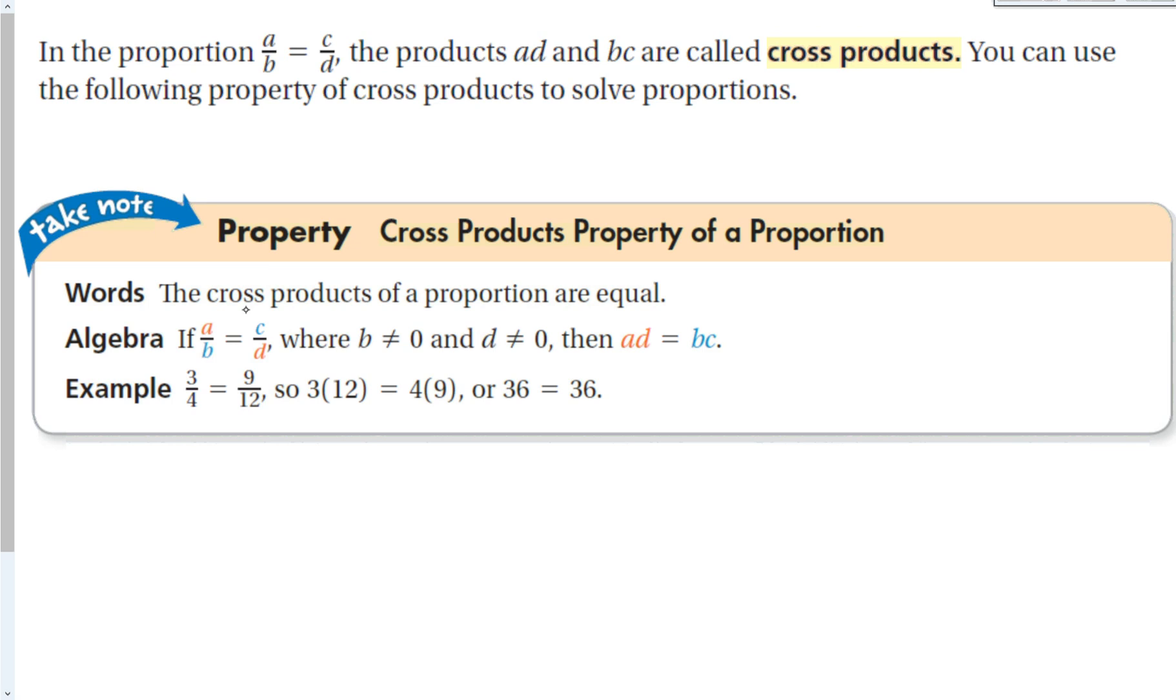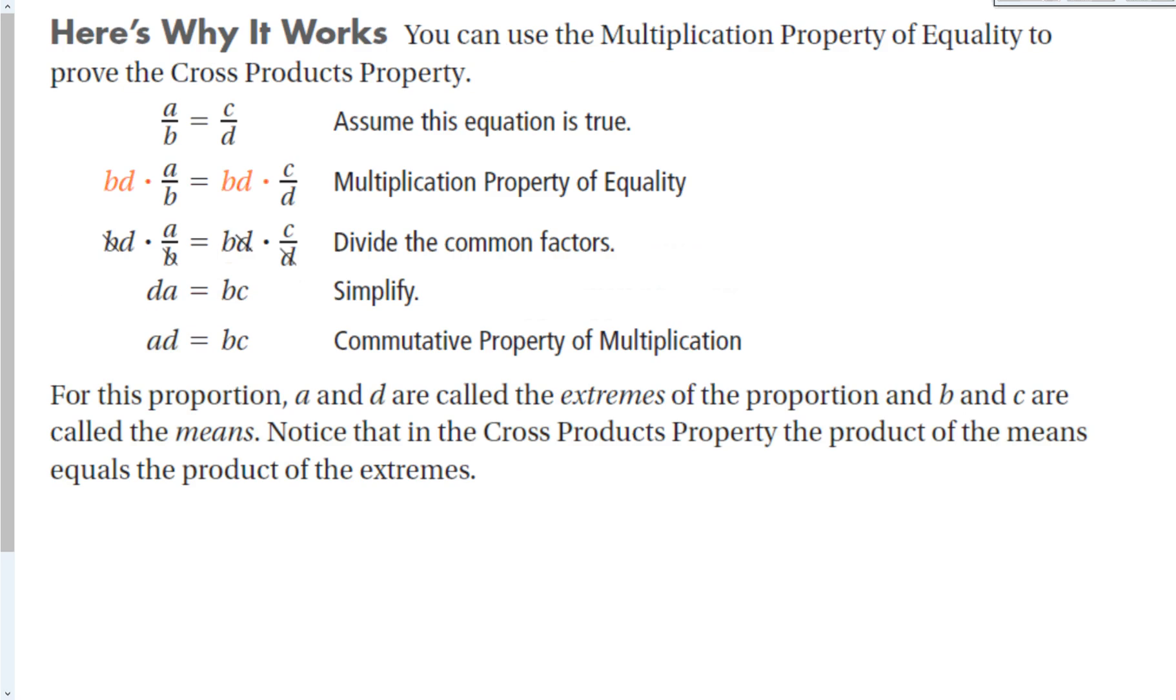You can use the following property of cross products to solve for proportions. The cross products of a proportion are always equal to each other. Notice in the red, A over B is equal to C over D. We have A and D. In the blue, we have B and C. As long as B and D are not equal to zero, then A times D is equal to B times C. For example, 3 times 12 is equal to 4 times 9, both 36.